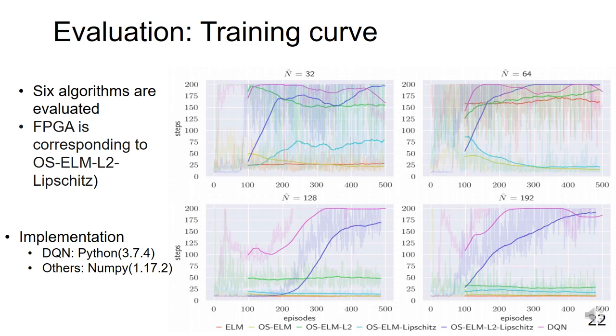The upper-right graph shows the result when N is 64. It shows a similar trend as when N is 32.